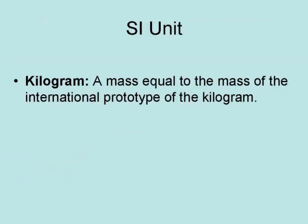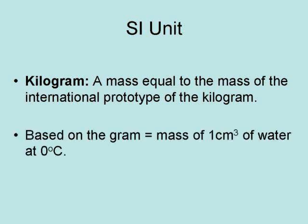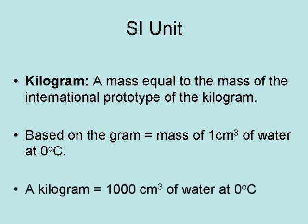The main SI unit of mass is the kilogram. It is a mass equal to the mass of the international prototype of the kilogram. The kilogram is based on the gram, which is equal to the mass of one cubic centimeter of water at zero degrees Celsius, meaning a kilogram equals the mass of 1,000 cubic centimeters of water at zero degrees Celsius.